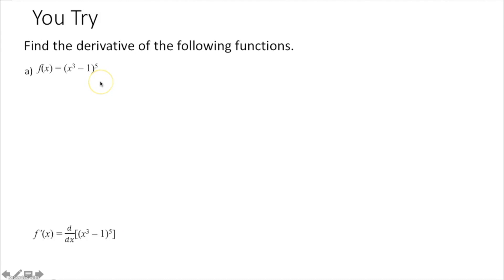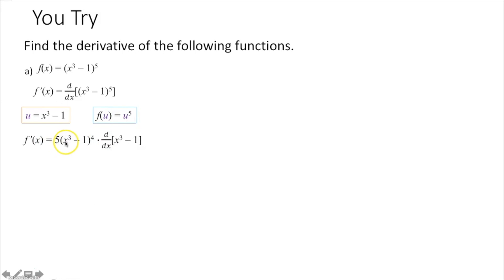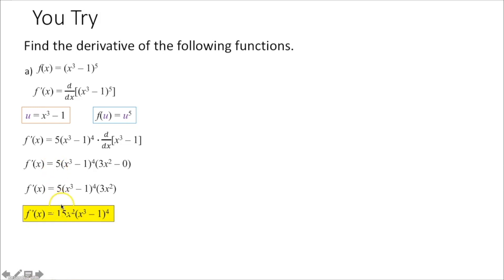I'm taking the derivative again. I have a function within another function, so I need to use the chain rule. I'm going to set u equal to my innermost function, x cubed minus 1. My outermost function is u to the fifth power. The chain rule says I take the derivative of my outermost function, getting 5u to the fourth, or 5 times the quantity x cubed minus 1 to the fourth, times the derivative of x cubed minus 1. The derivative of x cubed minus 1 is 3x squared minus 0, or 3x squared. Multiplying that to the 5 out front, I get 15x squared times the quantity x cubed minus 1 to the fourth power.